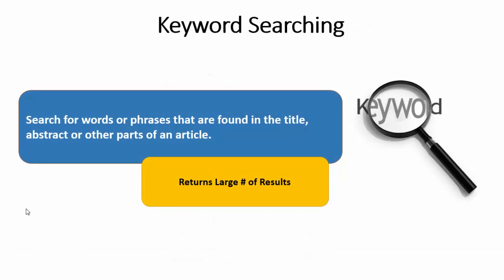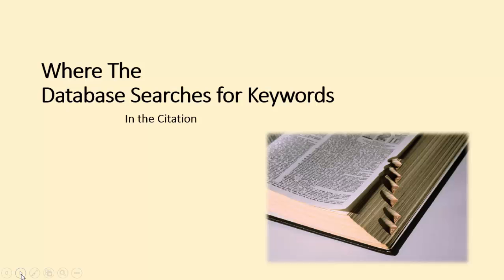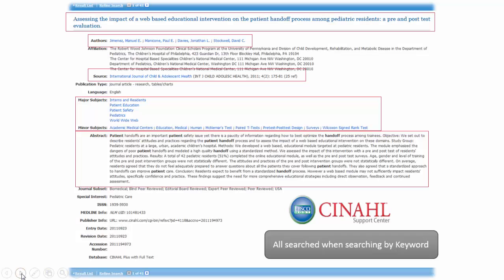Any time you do a search in Google Scholar or any other database where you're just putting words in the box and seeing what the results will be, you're most likely doing a keyword search. Keyword searching returns a large number of results, largely because it searches every field of the citation. An example can be seen when we look at this particular citation from CINAHL.